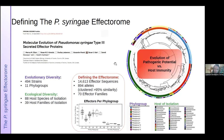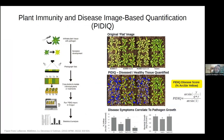We have this dataset as a useful resource for investigating the evolution of pathogenic potential of the syringae species complex, as reflected by host immunity responses. The screening to investigate those responses is made possible by another useful technology developed by the Gutman and DeVol labs called PIDIC — the Plant Immunity and Disease Image-Based Quantification Screening approach.